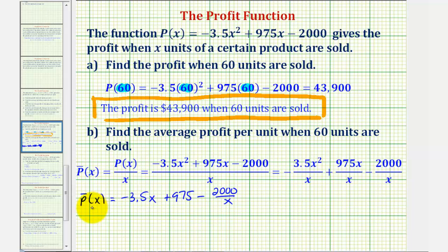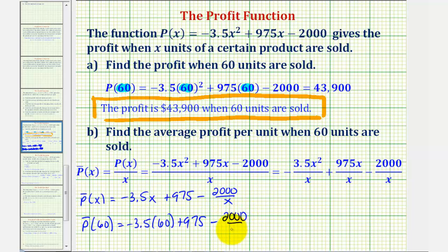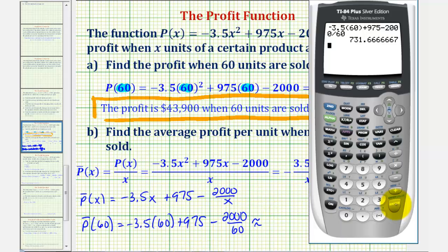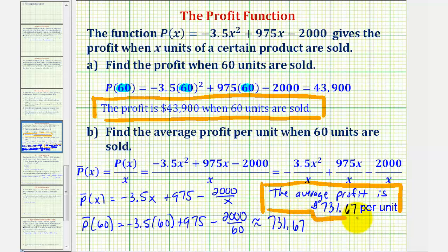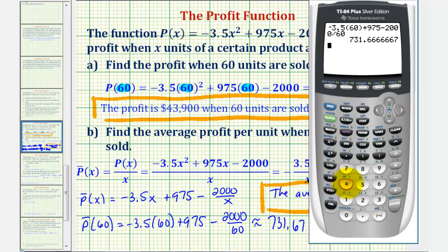Now we'll evaluate the average profit function when x equals 60. Going to the calculator, the average profit is approximately $731.67 per unit when 60 units are sold. Notice this is the same as taking $43,900 and dividing by 60.